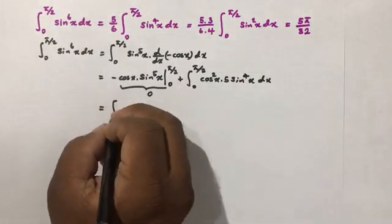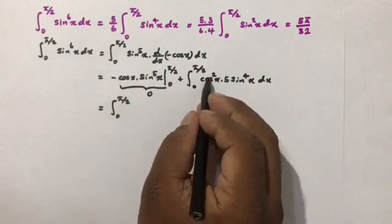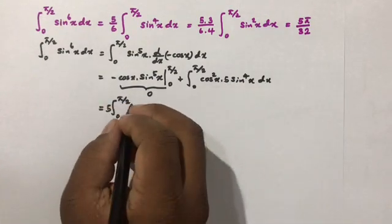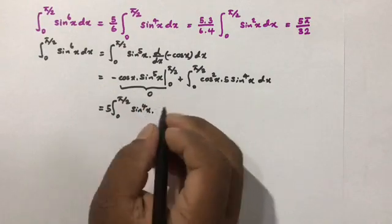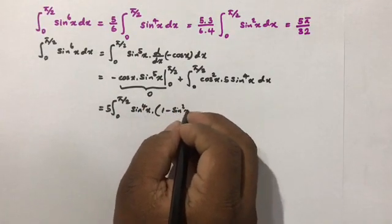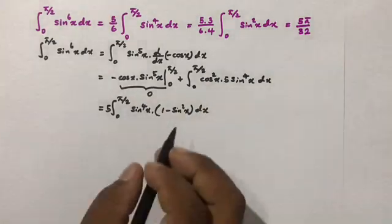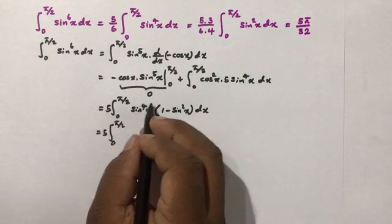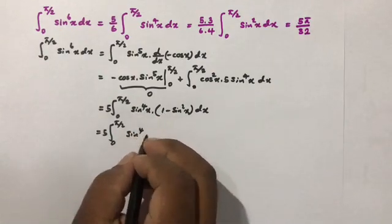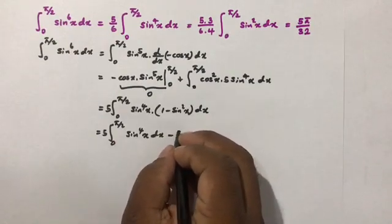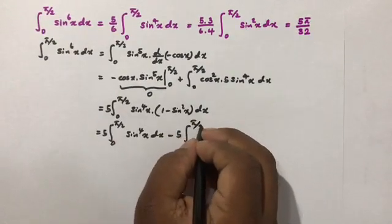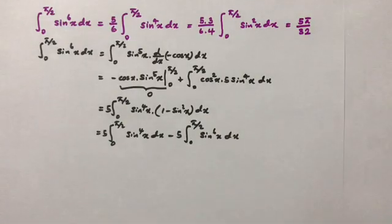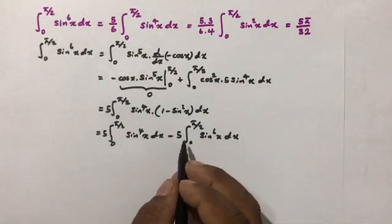Now instead of cos²(x) I write 1 − sin²(x), so we have 5 times the integral from 0 to π/2 of sin⁴(x)·(1 − sin²(x)) dx. Expanding this gives 5 times the integral of sin⁴(x) dx minus 5 times the integral of sin⁶(x) dx, both from 0 to π/2.